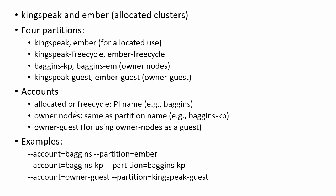The accounts are very straightforward. If you are using allocated or FreeCycle, it's simply your PI name — your principal investigator. In this case, our example is Baggins. If you're using the owner nodes, then it's the exact same name as the partition, so Baggins-KP, and the leaf partition is also the Baggins-KP account. For the owner-guest node partition, you simply use owner-guest as your account. Here we have examples of how you would use this: dash-dash-account equals Baggins, dash-dash-partition equals Ember.